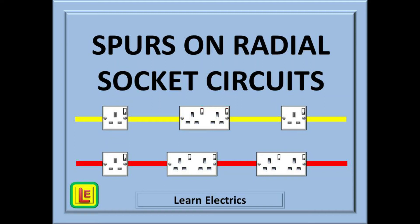Welcome to this video from Learn Electrics. Recently we looked at the right and wrong way to add spurs to a ring circuit, and so in this video we will explore how we can safely and correctly add spurs to a radial socket circuit. This subject does cause some confusion, but the correct solution is very easily understood, and if a few simple rules are followed there will not be a problem, and once learnt these rules will stay in your mental toolbox forever.